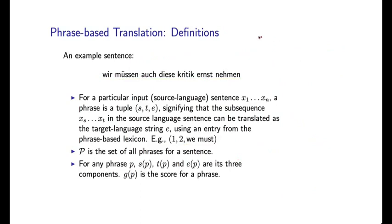For any phrase P, so let's say P equals one, two, we must, I'll sometimes use the following notation. S(P), T(P), and E(P) are its three components. So S of P is one, T of P is two in this case, and E of P equals we must. These three functions are just pulling out the three different components of the phrase.